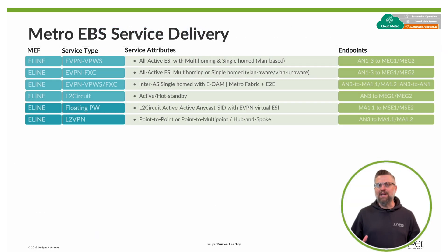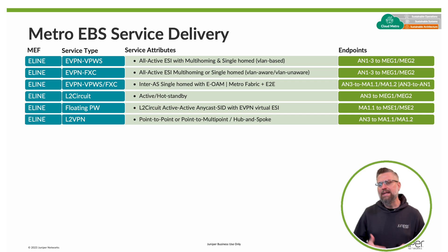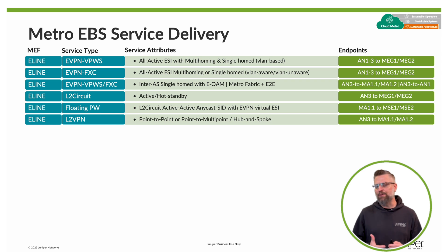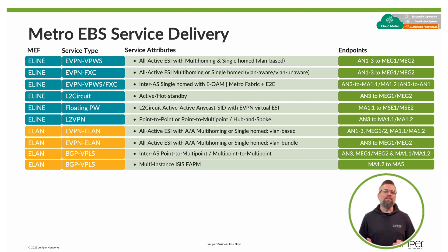From a services standpoint, our E-Line point-to-point services include EVPN, BPWS, and EVPN Flexible Cross-Connect with different permutations of high availability, along with traditional services like L2-Circuit and L2-VPN. Loading Pseudowire leverages EVPN virtual ESI with an Anycast SID. Next, we have our E-LAN services for point-to-multipoint or multipoint-to-multipoint use cases. This includes EVPN E-LAN with single and multi-homing, VLAN-based and VLAN bundle services. We also include a couple of use cases for traditional E-LAN BGP-VPLS services.